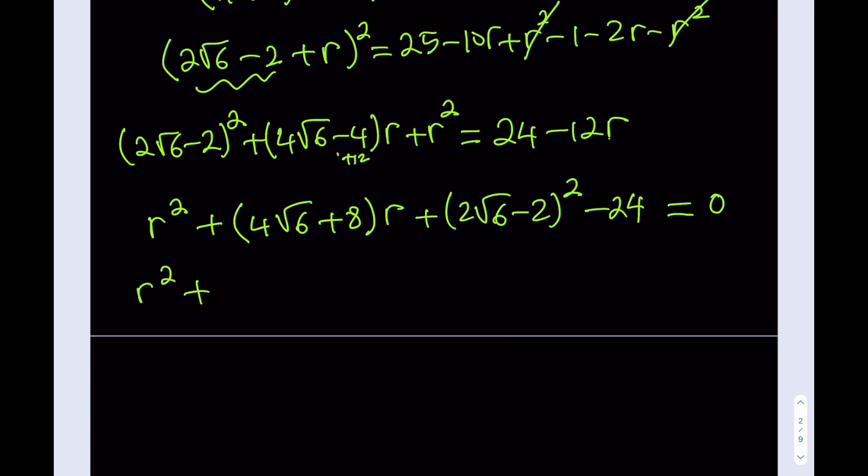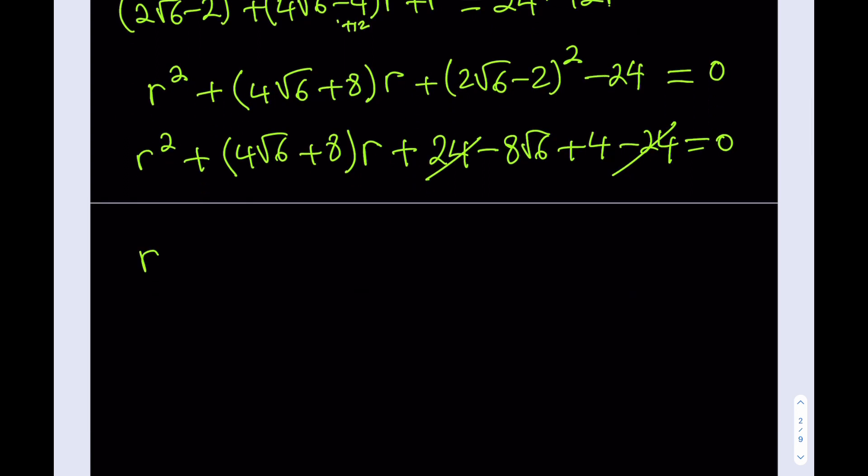Now we can arrange this a little bit more by expanding some terms here and then solving this quadratic. All right. Let's see what we can do. I'm going to expand this now. That's going to look like 24, and if you multiply these and double the answer, you're going to get -8√6 + 4, and then I got -24, and the whole thing equals 0. Beautiful. Now the 24 cancels out.